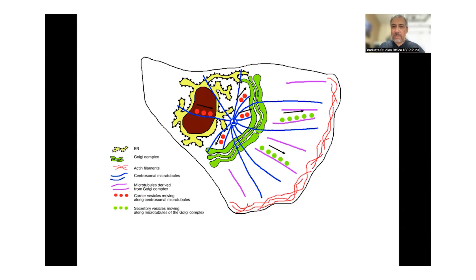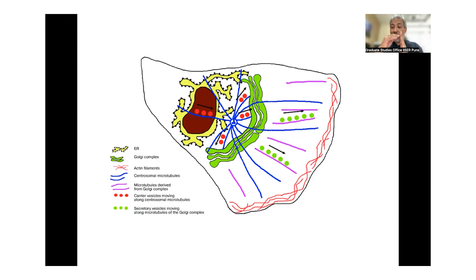A lot of the Golgi's architecture is maintained by the cytoskeleton. The Golgi compartment sits around the MTOC, so many microtubules are in very close proximity and contact with the Golgi, which is important for maintaining its compact, packed architecture. Many Golgi compartments actually bind motor proteins, and the motor proteins that walk on microtubules are in turn attached to Golgi membranes — so the relative movement of motor proteins also helps keep the Golgi in position.